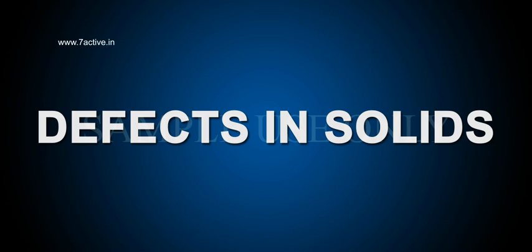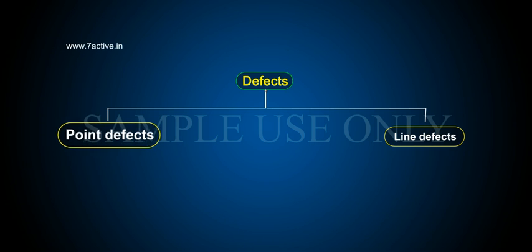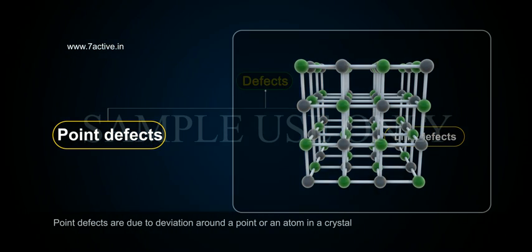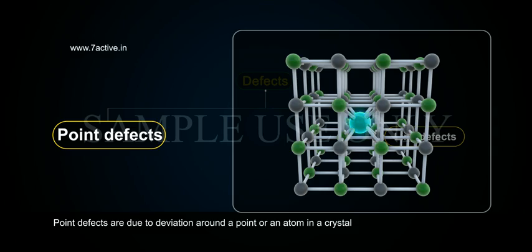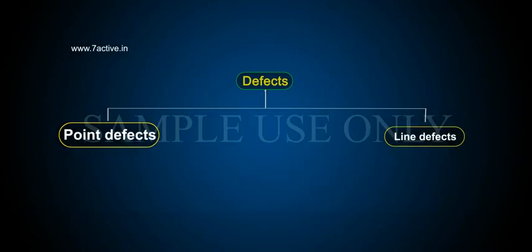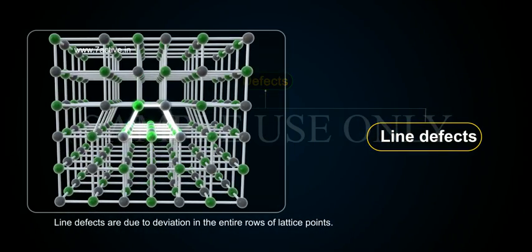Defects in Solids. Defects are mainly two types: point defects and line defects. Point defects are due to deviation around a point or an atom in a crystal. Line defects are due to deviation in the entire rows of lattice points.